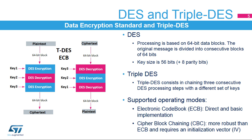Data Encryption Standard works on a data block of 64 bits. Input data is encrypted or decrypted using the same 56-bit key. Large messages are divided into several blocks of 64 bits that are chained together following one of two modes of operation: Electronic Codebook, or ECB, or Cipher Block Chaining, or CBC.